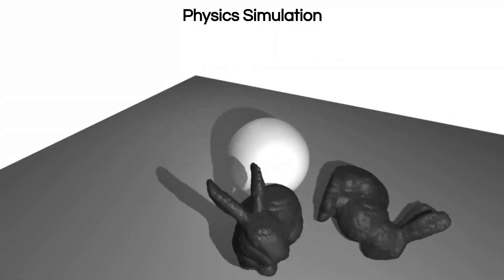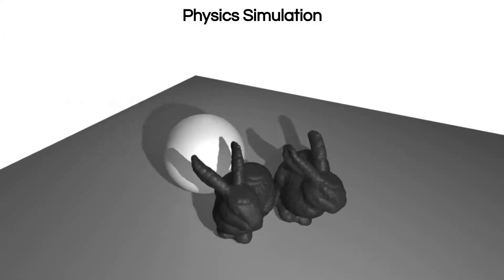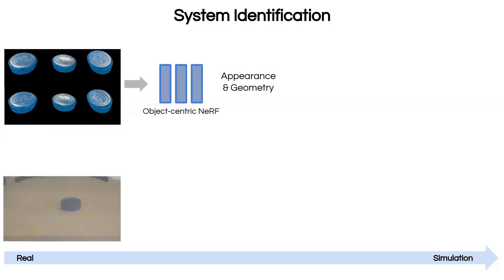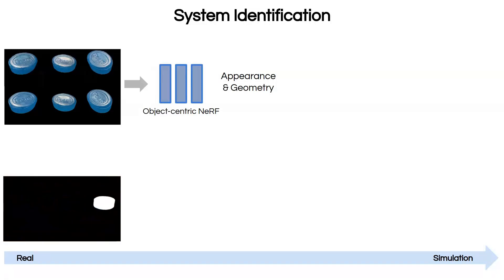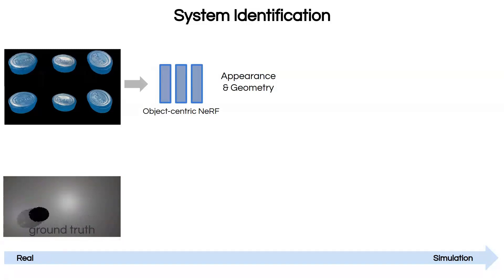Now we describe how we can build a Dynamics Augmented Neural Object from raw sensor data. In the first step, we train an object-centric NeRF from real pictures of a soap bar. Then, from a real video of the object, we extract the ground-truth trajectory through minimization of a mask-based loss.